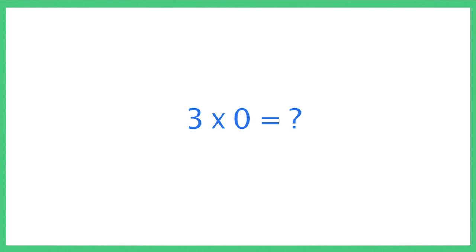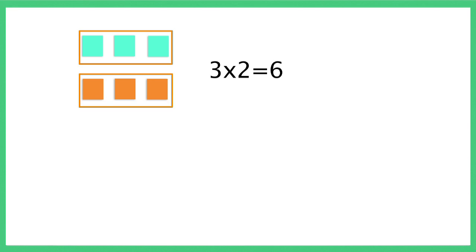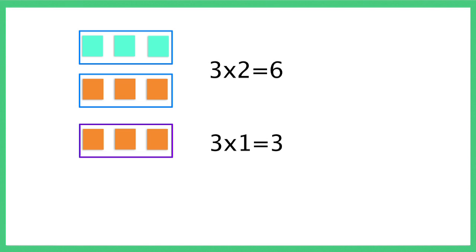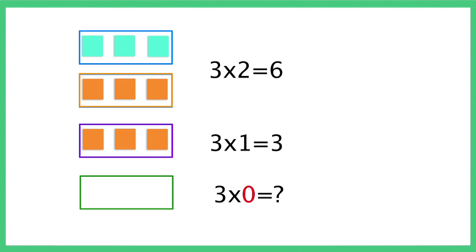Here's an important fact about multiplying by 0. For example, take 3 two times. When we remove one group of 3, we only have one group of 3 left. When that is removed, how many groups of 3 do we have? Zero groups. So 3 multiplied by 0 is 0. The product of 0 and any number is 0.